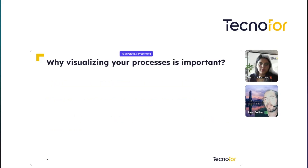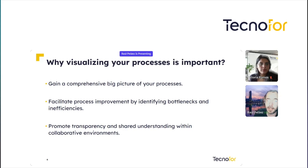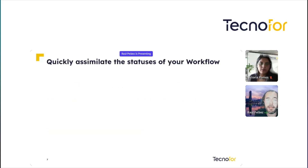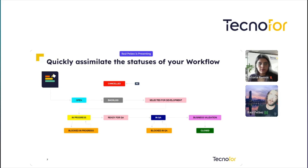Why is visualization of your processes important? Because you can gain a comprehensive big picture of your processes. You can facilitate process improvement by identifying bottlenecks and inefficiencies, and you can promote transparency and self-understanding within collaborative environments. In other words, you can quickly assimilate the information of your Jira — for example, within your workflow — assimilating the statuses in a quick view, in a blink, of how is the workflow of your processes. As you can see, we can colorize all the statuses.